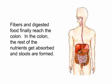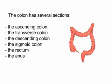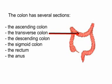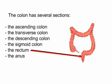Fibers and digested food finally reach the colon. In the colon, the rest of the nutrients get absorbed and stools are formed. Stools are stored in the last part of the colon, the sigmoid colon and rectum, before being excreted. The colon has several sections: the ascending colon, the transverse colon, the descending colon, the sigmoid colon, the rectum, and the anus.